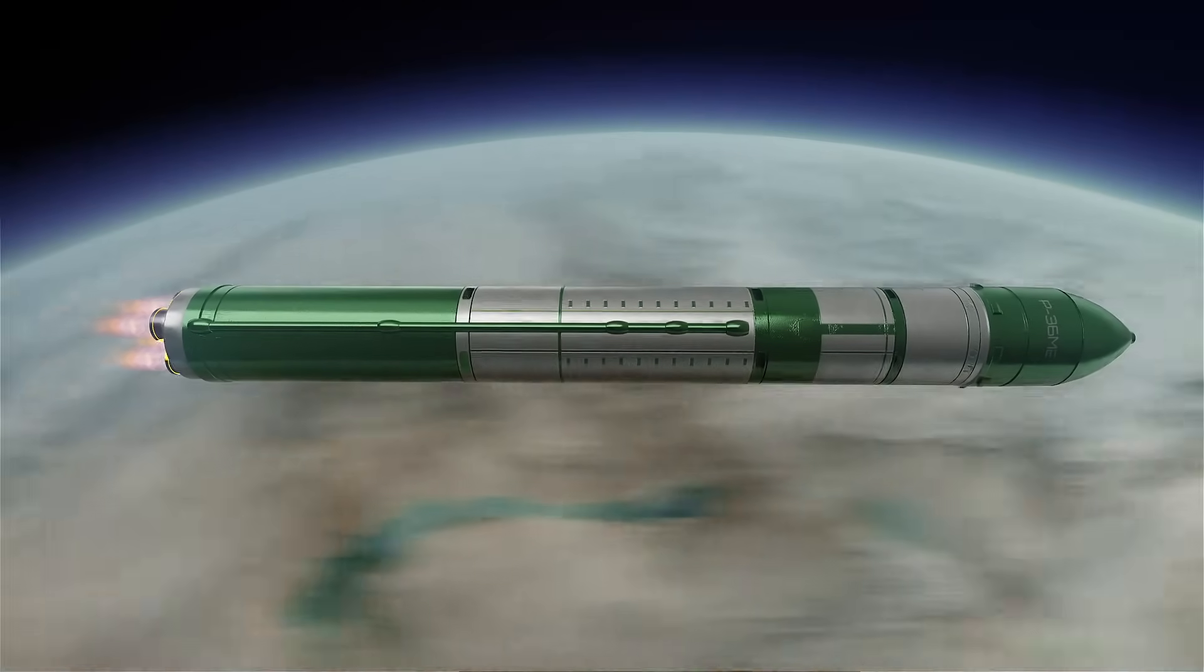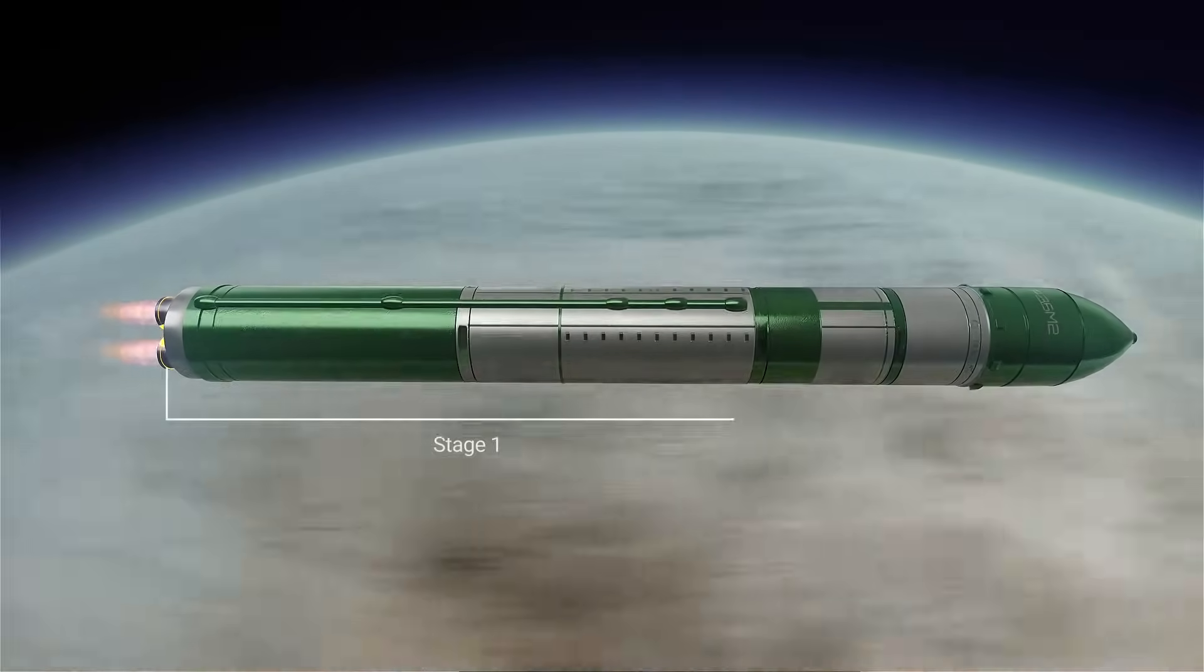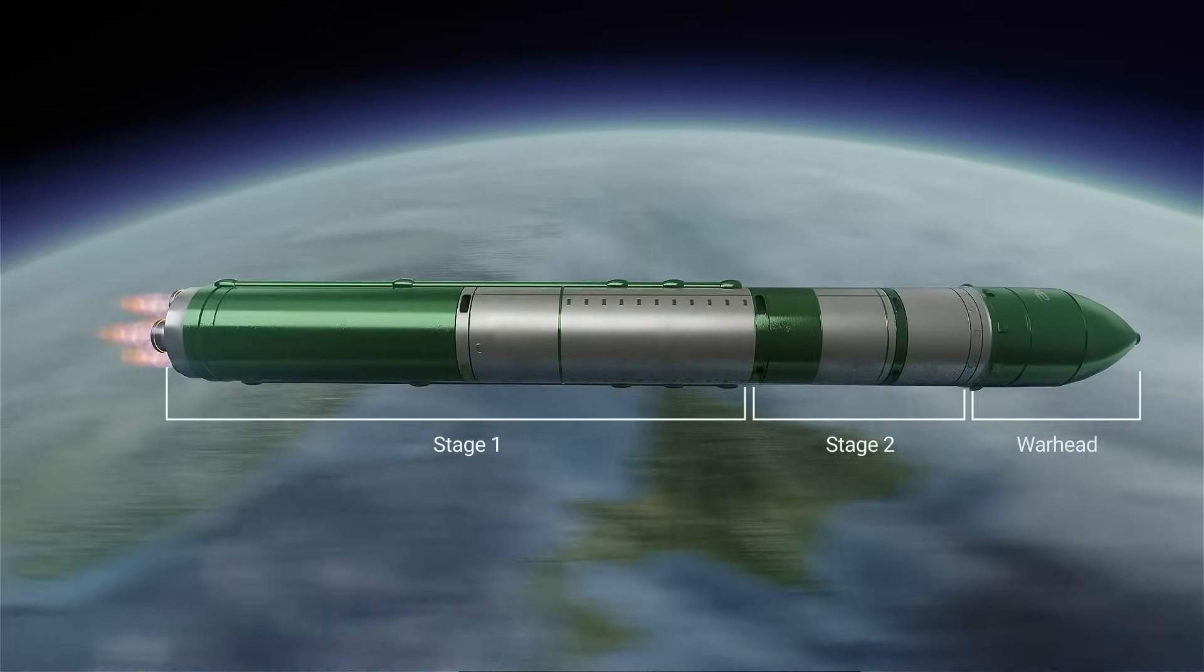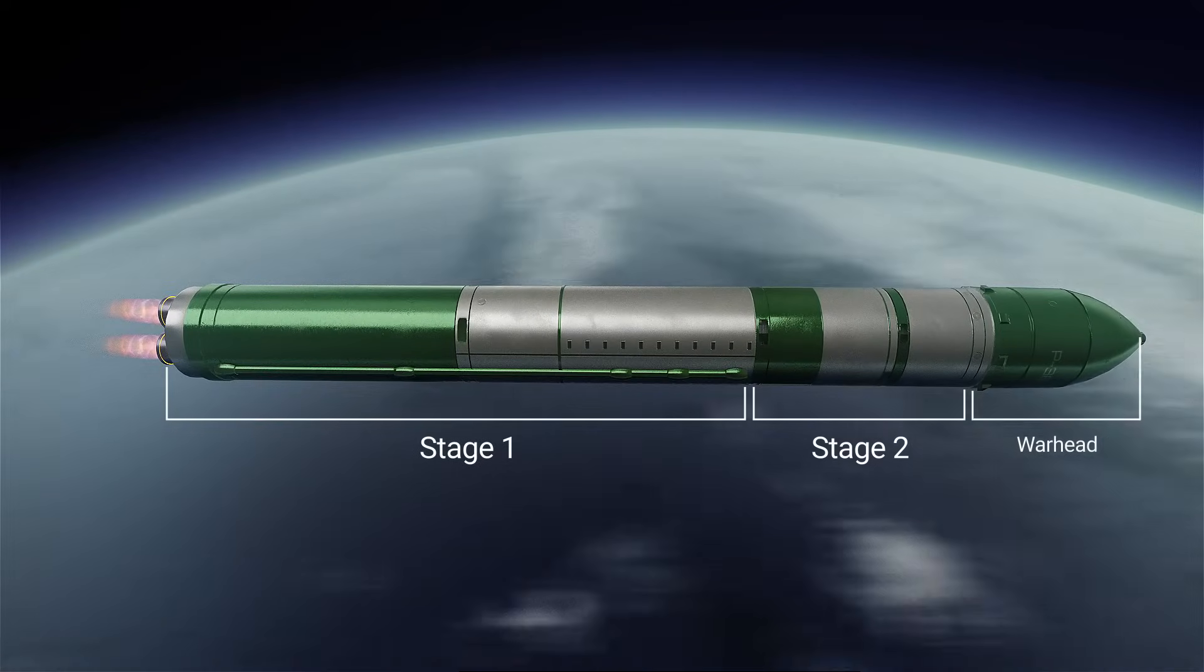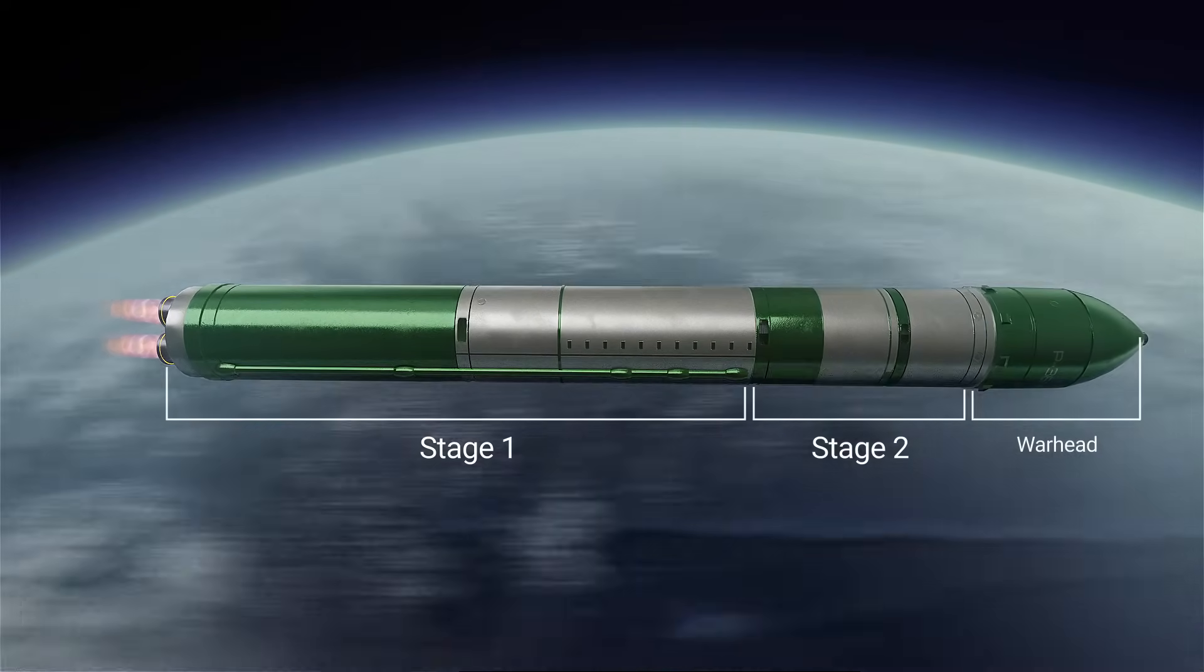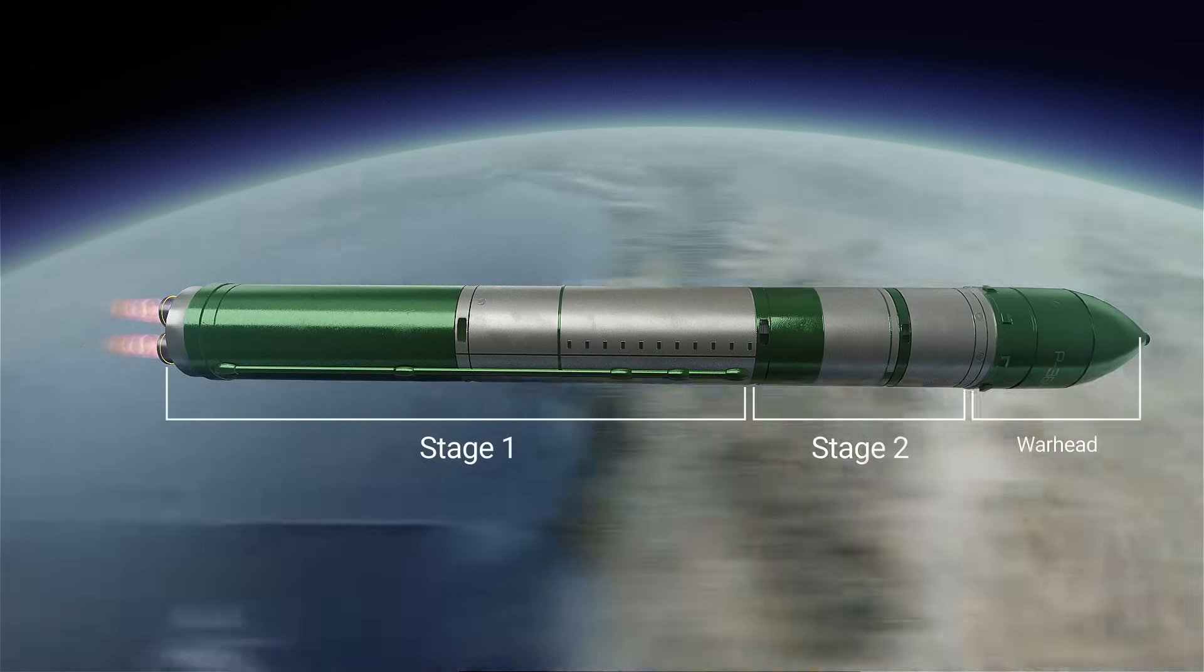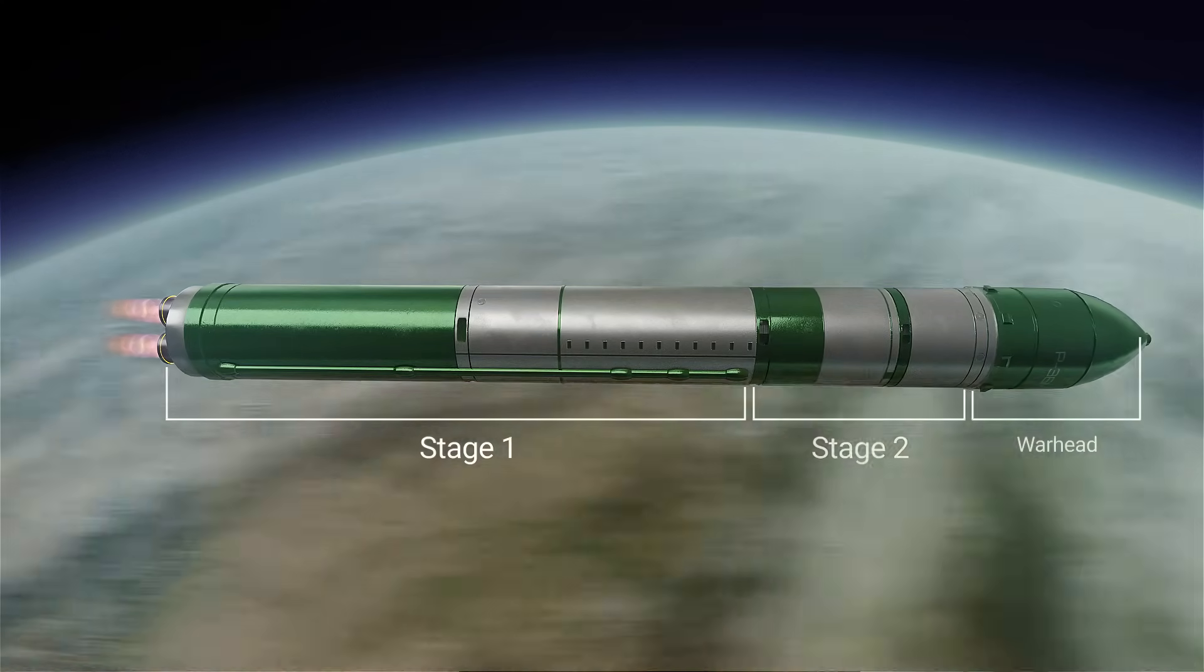The missile consists of three components: the first stage, the second stage, and the warhead. The first and second stages are powerful engines that allow the rocket, comparable in weight to 150 average passenger cars, to leave the Earth's atmosphere.